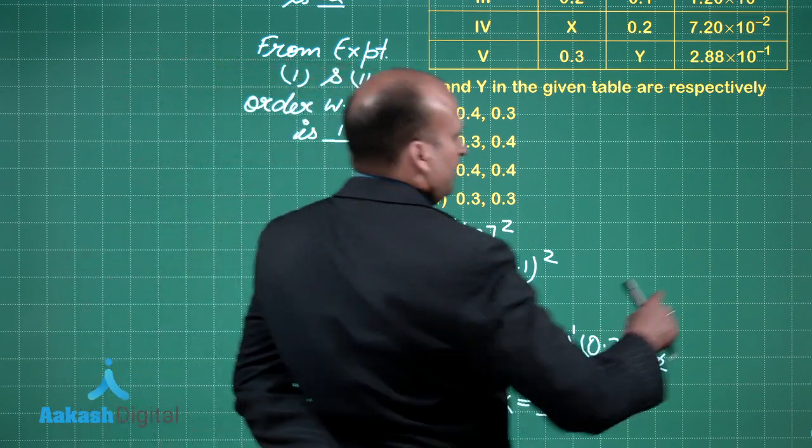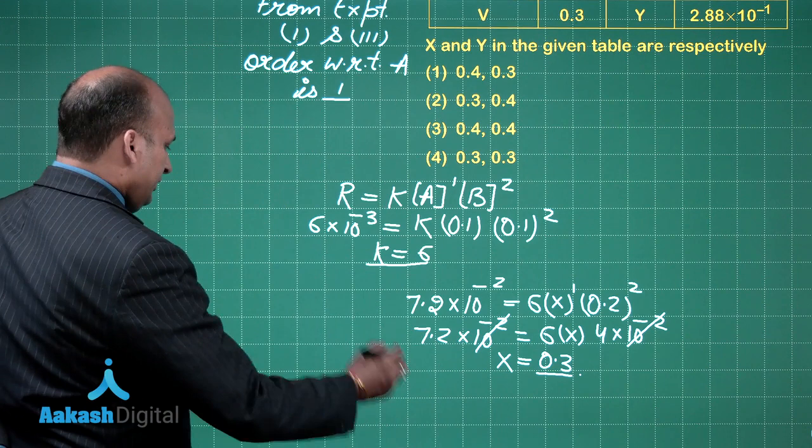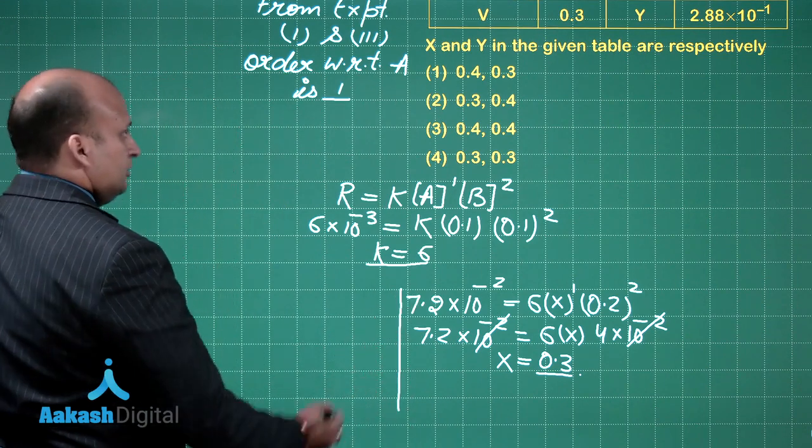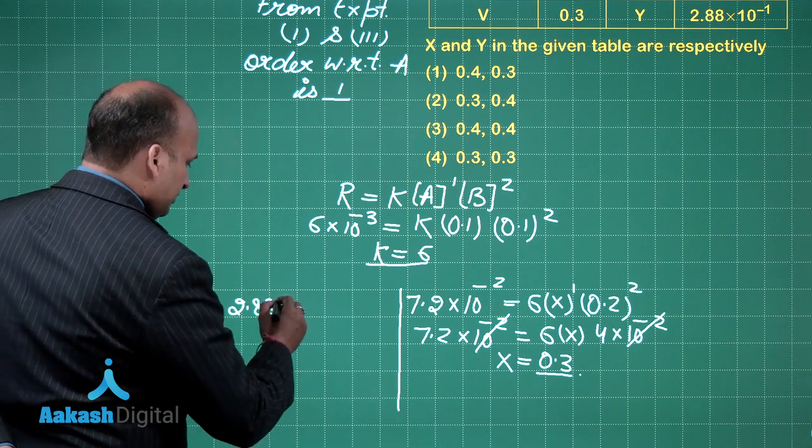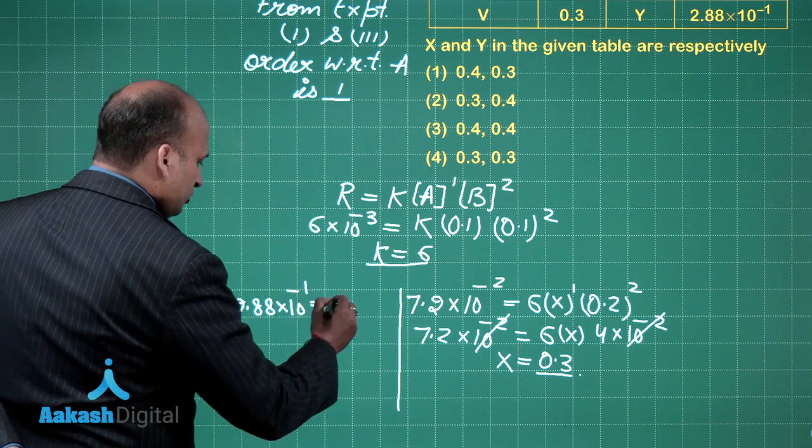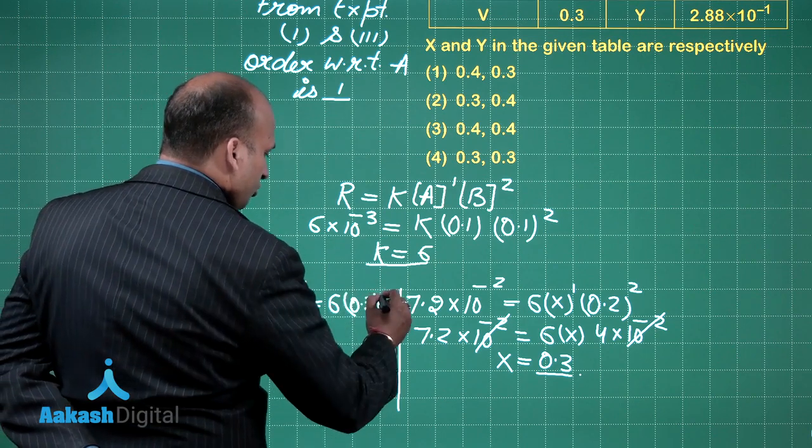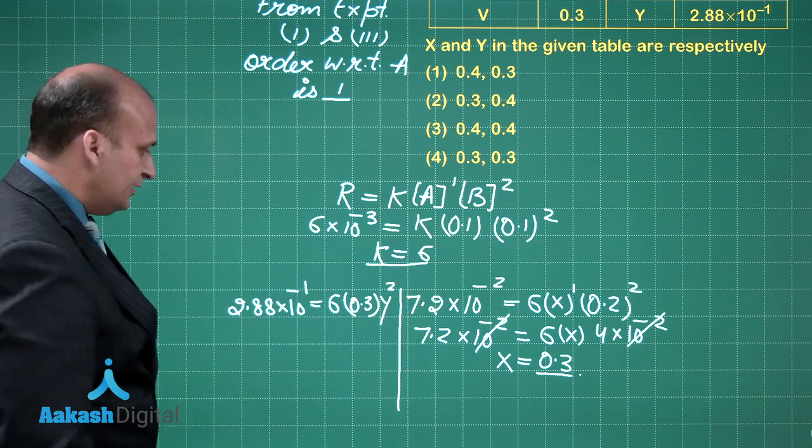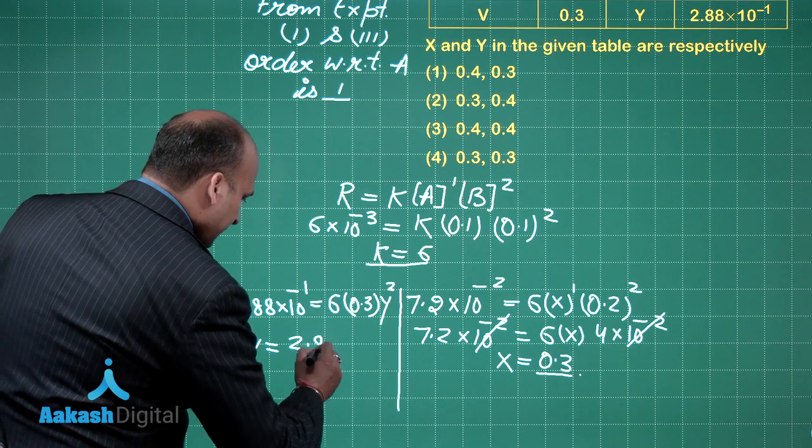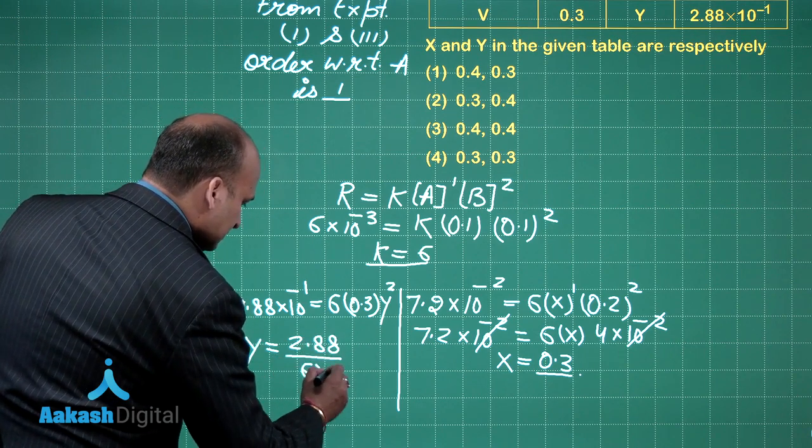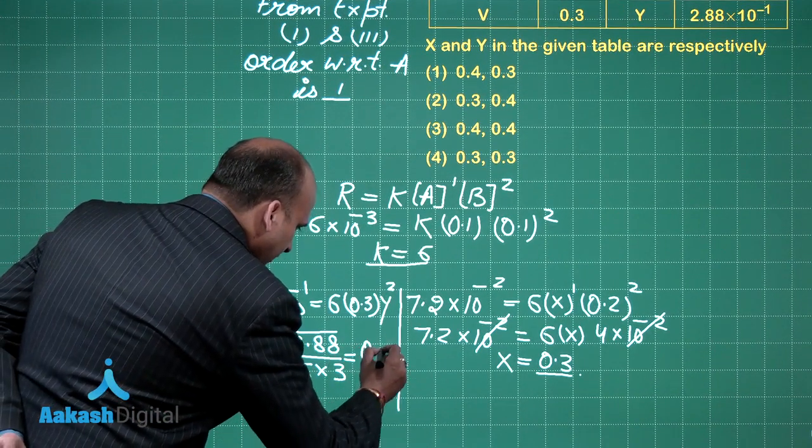Now for Y, we have to look at experiment number 5. The value of R is 2.88 into 10 raised to power minus 1, which is equal to 6 into 0.3 into Y raised to power 2. Now I have to solve for Y, which is equal to 2.88 divided by 6 into 3, square root, which is equal to 0.4.